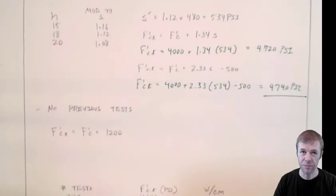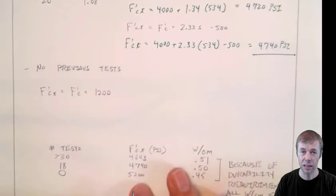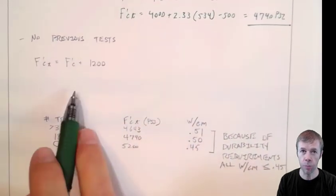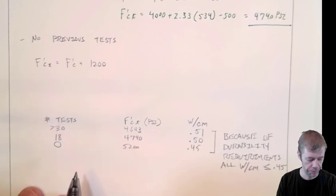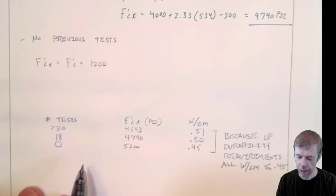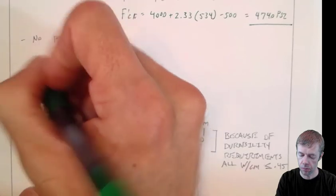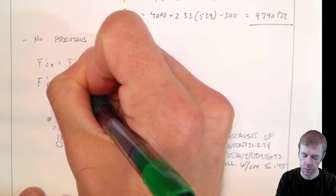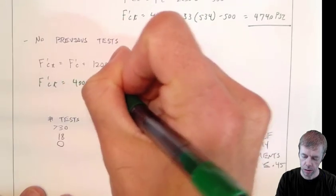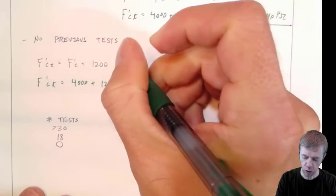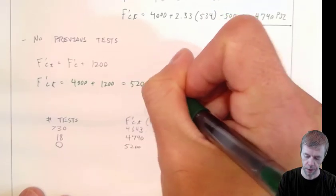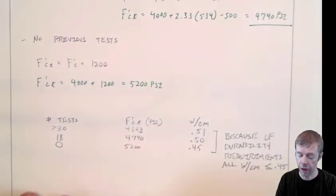Now, let's say I didn't have any previous tests. No information. No previous testing information. That's okay. 4,000 plus 1,200. It's 5,200 psi.